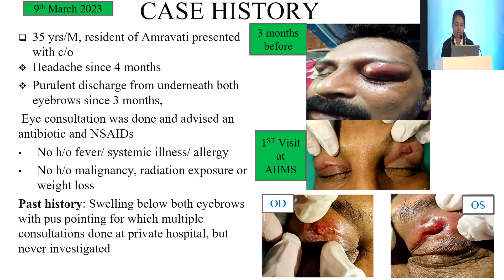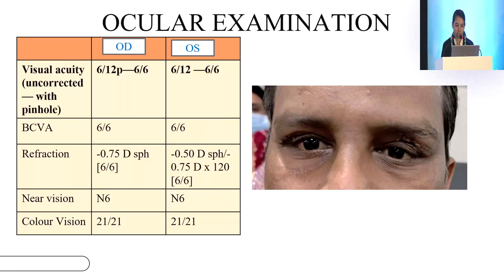A 35-year-old male, a resident of Amravati, presented to the OPD with complaints of headache since 4 months and purulent discharge underneath both eyebrows since 3 months, for which an eye consultation was done and only an antibiotic was prescribed. Three months prior to this, he had a complaint of swelling below both eyebrows with pus pointing, for which multiple consultations were done but he was never investigated.